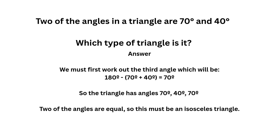Next question: two of the angles in a triangle are 70 degrees and 40 degrees. The three corners of a triangle add up to 180 degrees, so 70 plus 40 equals 110, and 180 minus 110 gives us 70 — that's the size of the third vertex. So our triangle has angles of 70 degrees, 40 degrees, and 70 degrees. Two of the angles are the same size, so this must be an isosceles triangle.